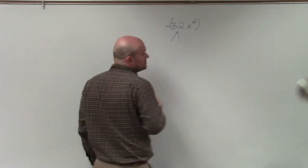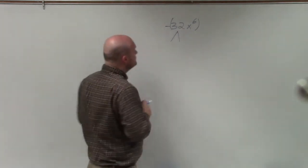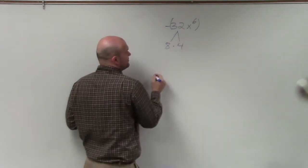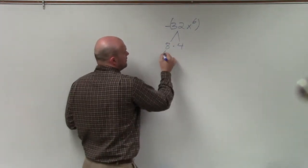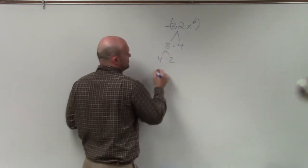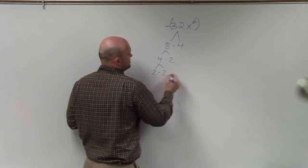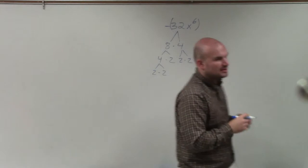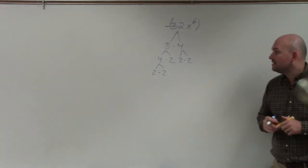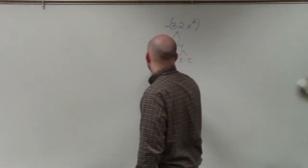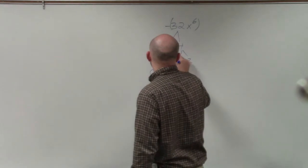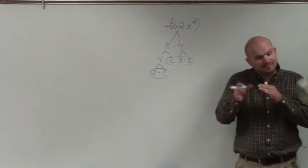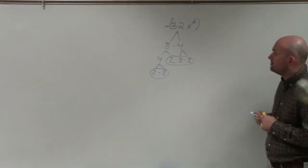We're going to do these kind of separately. So 32 — I can do 8 times 4, then 4 times 2, 2 times 2, 2 times 2. You can see my rows here: I have 2 times 2, and 2 times 2 times 2. These are all my prime numbers because 2 is prime. So I kept on breaking it down until I had all prime numbers.